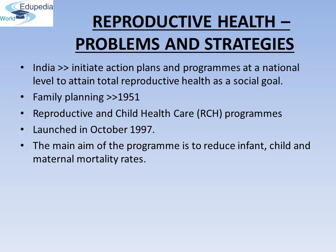Reproductive health: problems and strategies. India was among the first countries in the world to initiate action plans and programs at a national level to obtain total reproductive health as a social goal. These programs, called family planning, were initiated in 1951 and were periodically assessed over the past decades. Improved programs covering wider reproduction-related areas are currently in operation under the popular name Reproductive and Child Health Care (RCH) programs.